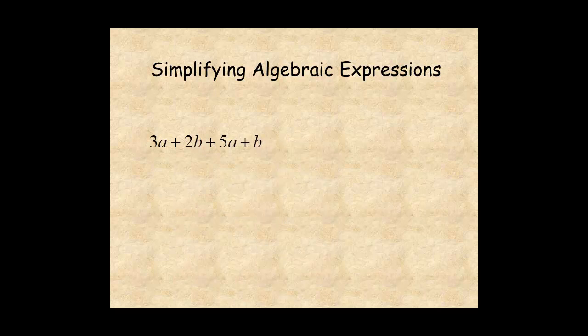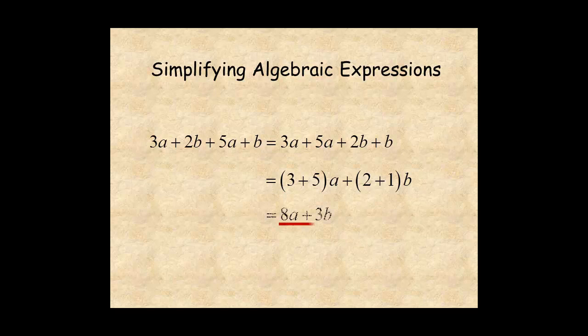In the next example, you have two different kinds of terms. Then, add the coefficients, 3 plus 5a, and 2 plus 1b, which equals 8a plus 3b. Since these are not like terms, you don't combine them.